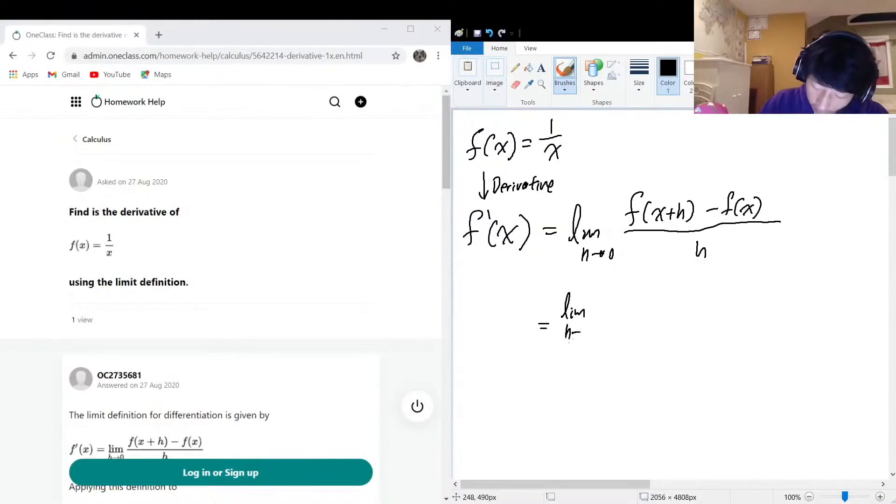So this will be limit as h approaches zero. I know it's a little painful sometimes to be writing limit so many times, but you do have to, there's no easy way around that. One over x plus h minus one over x, all divided by h.